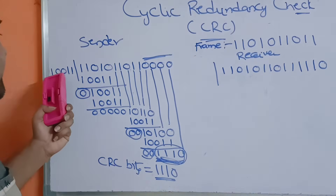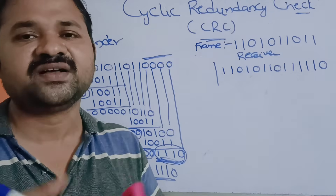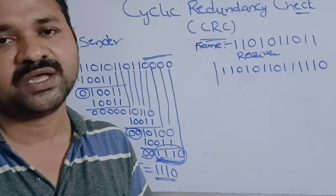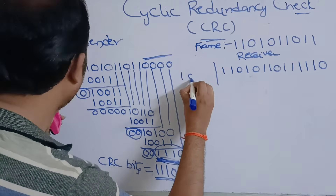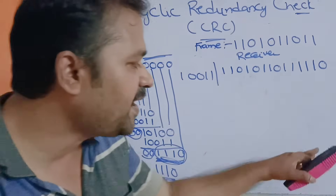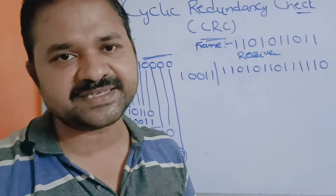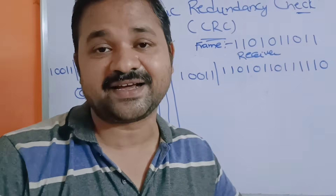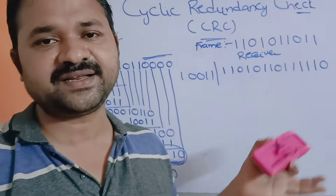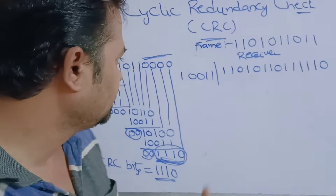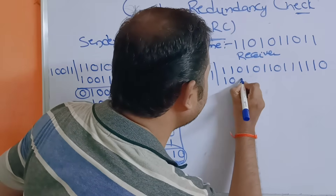The divisor or generator must be the same at both sender and receiver. Initially, both sender and receiver share the divisor value; that value must be the same on both sides. Here the divisor is 1 1 0 0 1. If the receiver gets a remainder of 0, it concludes there is no error in the message. If not, there is an error and it asks for retransmission.